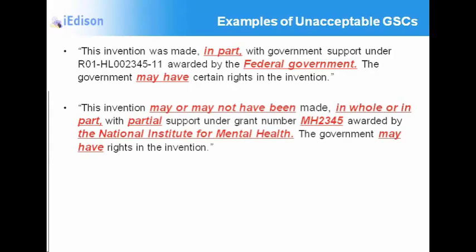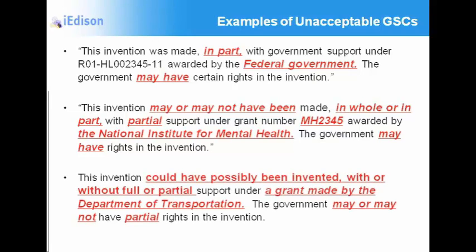Now we're getting really creative. 'This invention may or may not have been made, in whole or in part, with partial support under grant number MH2345' — notice the missing leading zeros — 'awarded by the National Institute for Mental Health. The government may have rights in the invention.' And finally: 'This invention could have possibly been invented with or without full or partial support under a grant made by the Department of Transportation. The government may or may not have partial rights in the invention.' Note that listing the Department of Transportation would be acceptable only if it also listed the National Institutes of Health and the correct grant numbers. No creative writing.